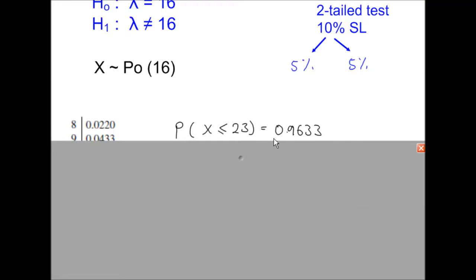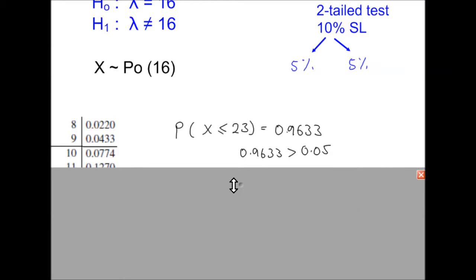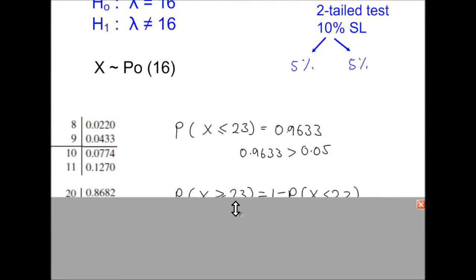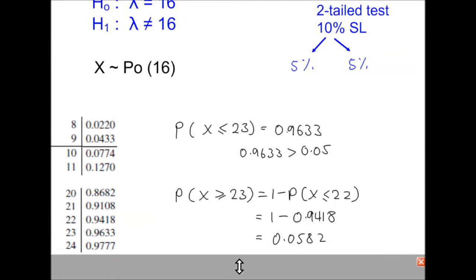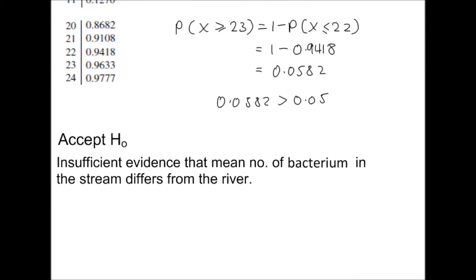So the probability that x is less than or equal to 23 is 0.9633, using the tables. The probability that x is more than or equal to 23, using the complement, is 1 minus 0.9633, which equals 0.0367. And 0.0367 is less than 0.05. Again, this result is not significant, so we accept H0. Same conclusion as before.